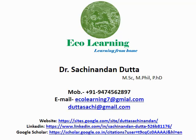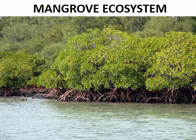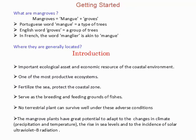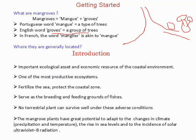Hi everyone, this is Dr. Shochina Nundato from EcoLearning. In today's topic we'll discuss the mangrove ecosystem. Mangrove is a Portuguese word meaning a type of tree, and the English word 'grove' means a group of trees. So mangrove means a special type of tree within a group — trees found in the zone where the river meets the ocean. This transitional zone is also called an estuary.